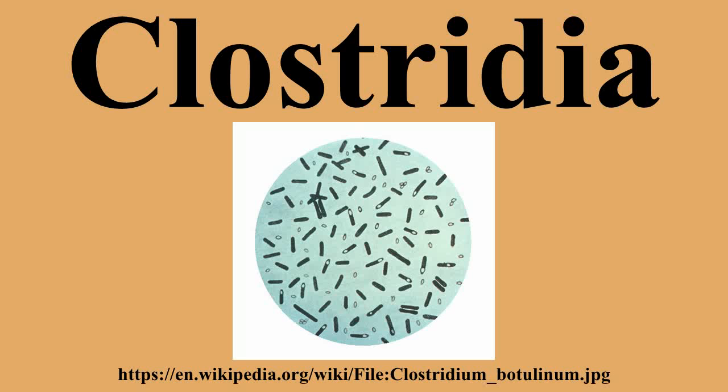The Clostridia are a highly polyphyletic class of firmicutes, including Clostridium and other similar genera. They are distinguished from the bacilli by lacking aerobic respiration. They are obligate anaerobes and oxygen is toxic to them. Species of the genus Clostridium are often, but not always, gram-positive and have the ability to form spores.